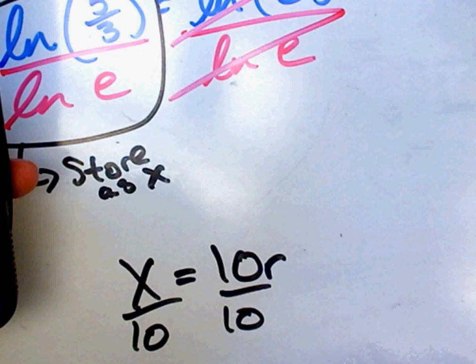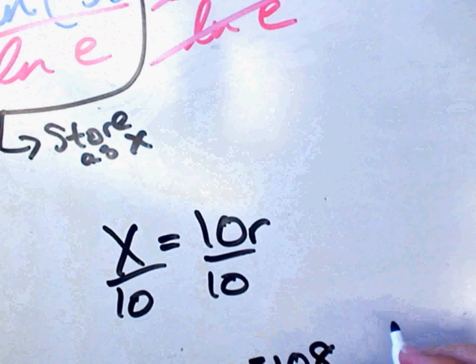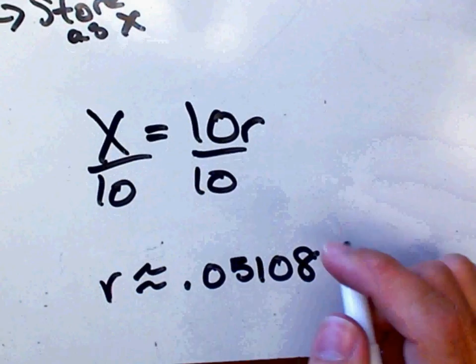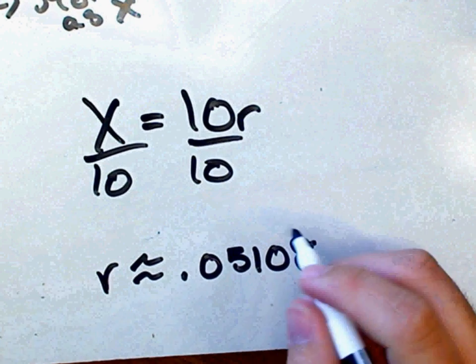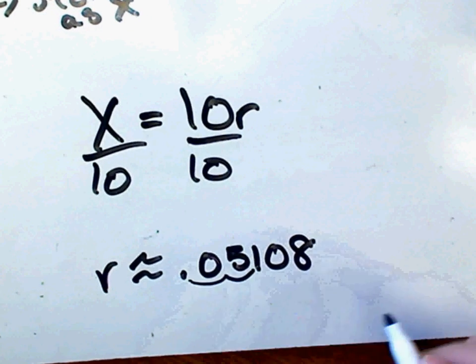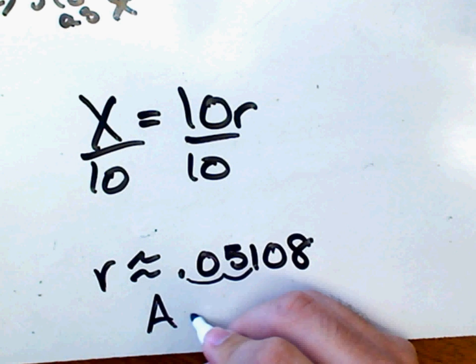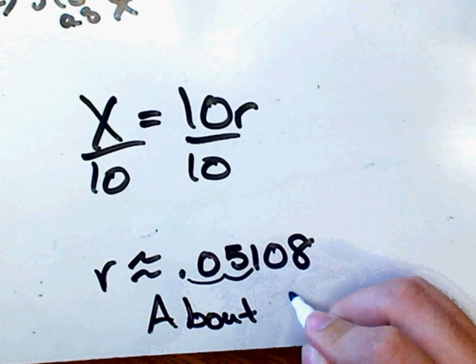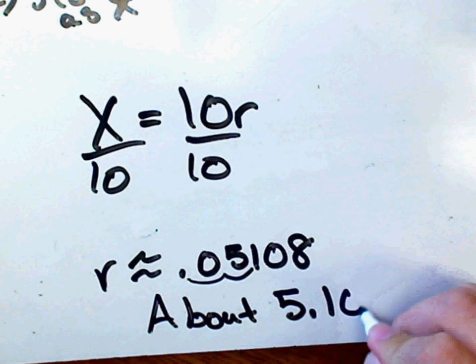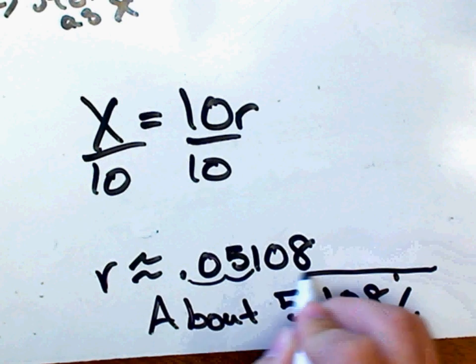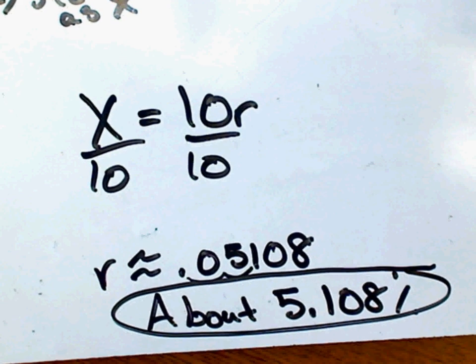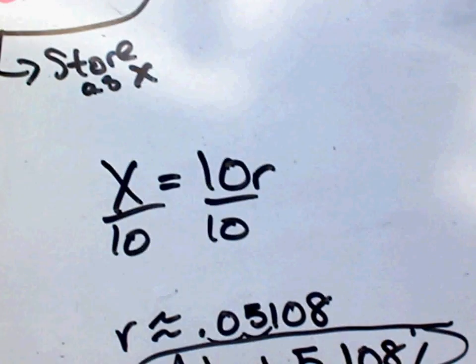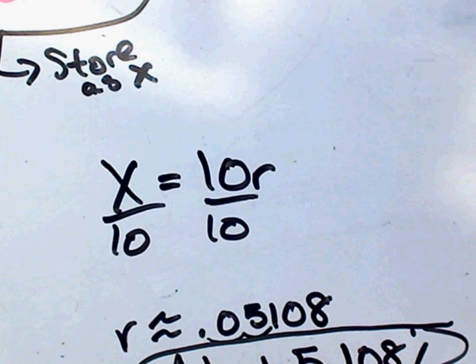So r is approximately x divided by 10, which is 0.05108. So my percentage, I need to take this and turn it into a percentage, which means I need to move the decimal place over two places. So we would say about 5.108%.